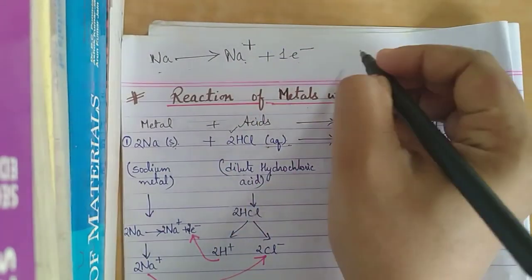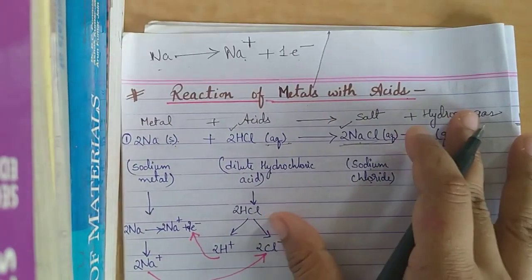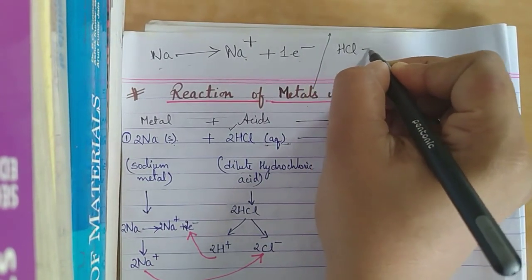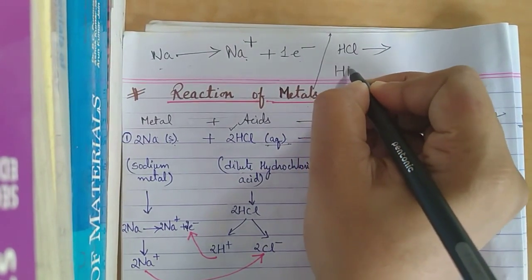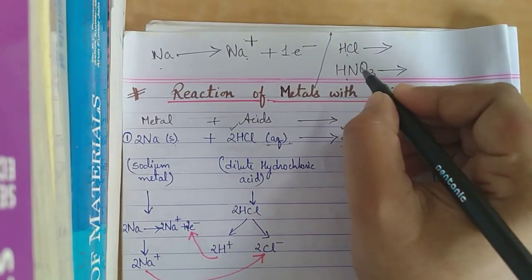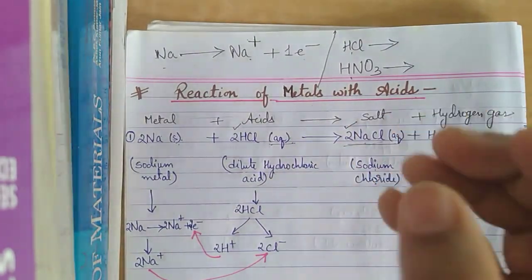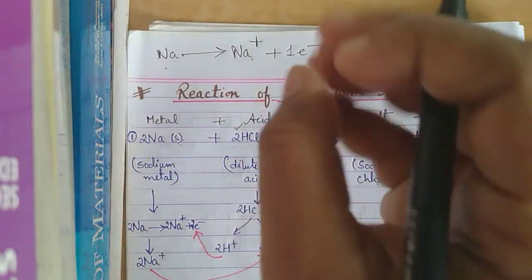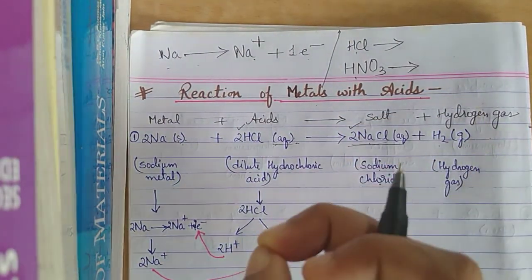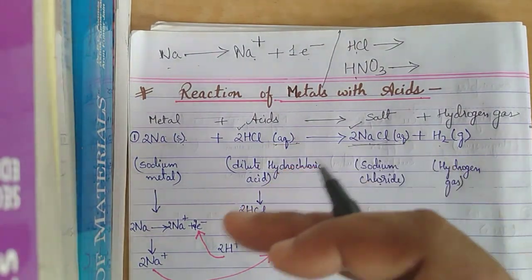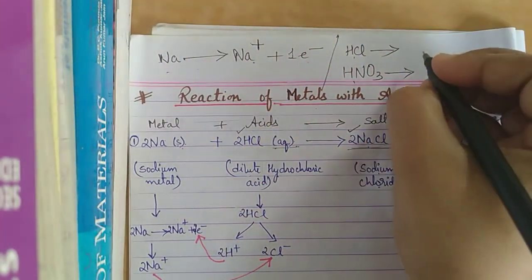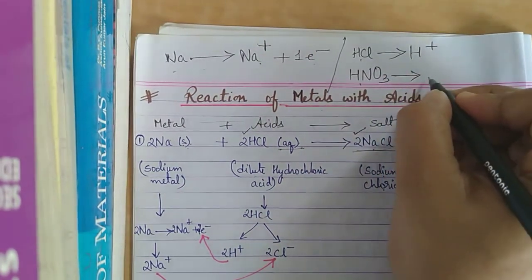Now let's understand the property of acid. Take any acid — HCl (hydrochloric acid) or HNO₃ (nitric acid). The tendency of acid is that when you dissolve it in water, it releases H⁺ ions into the solution.